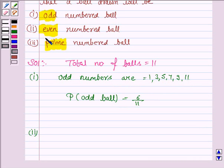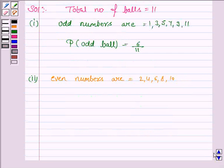Now in the second part we have to find the probability that ball drawn is even numbered ball. So even numbers are 2, 4, 6, 8, and 10. And how many numbers are there which are even? 1, 2, 3, 4, 5. So the probability of even ball is 5 by 11.